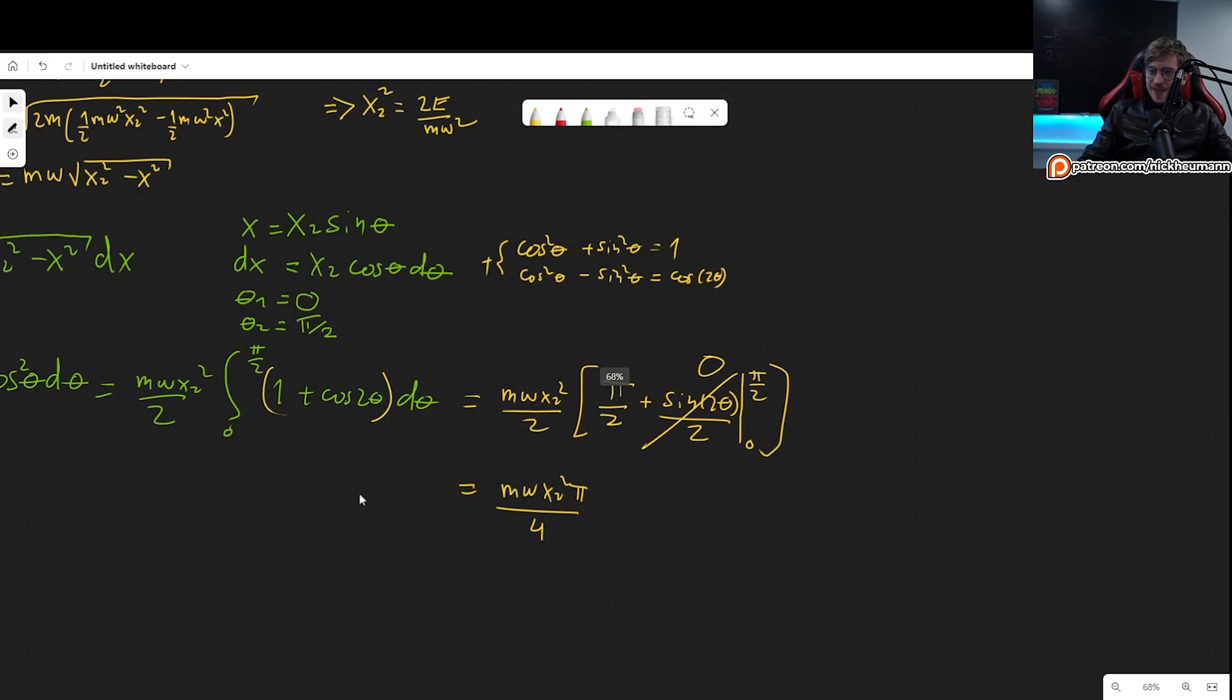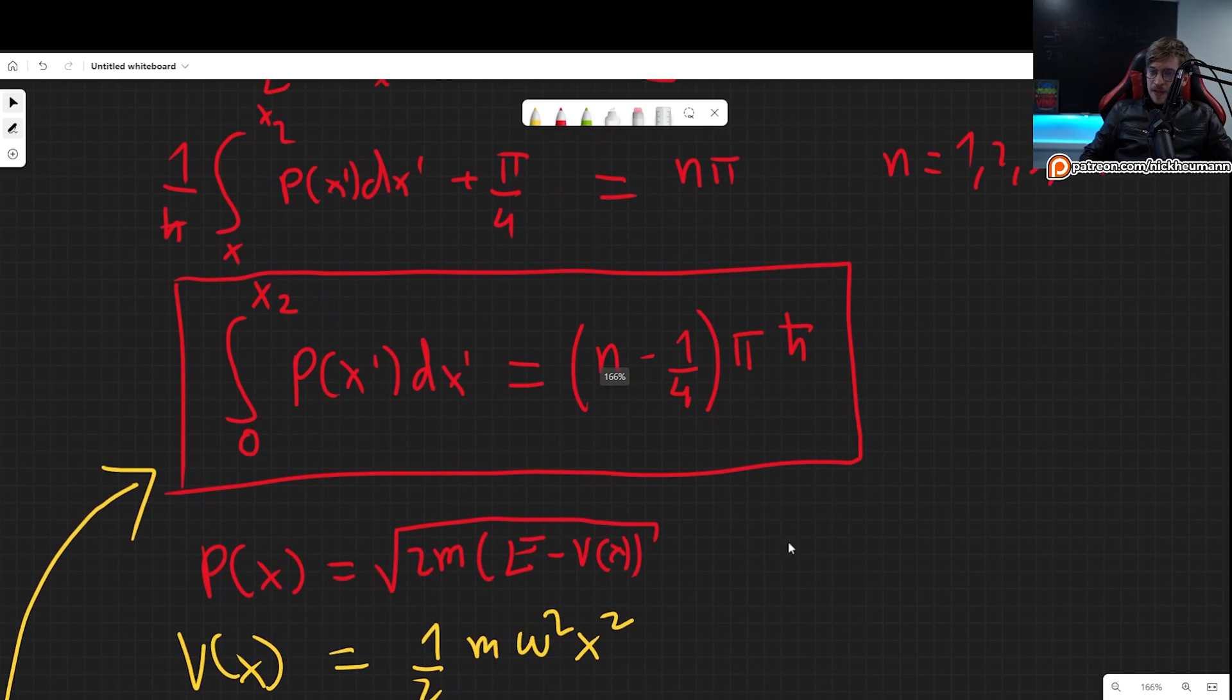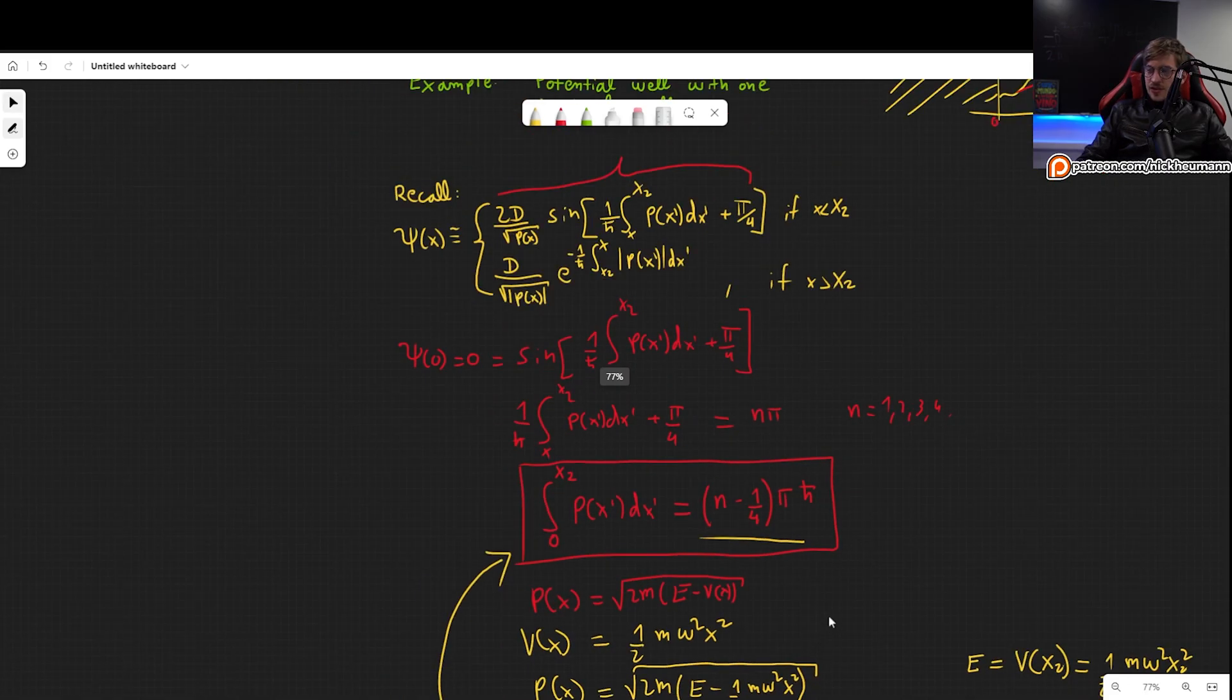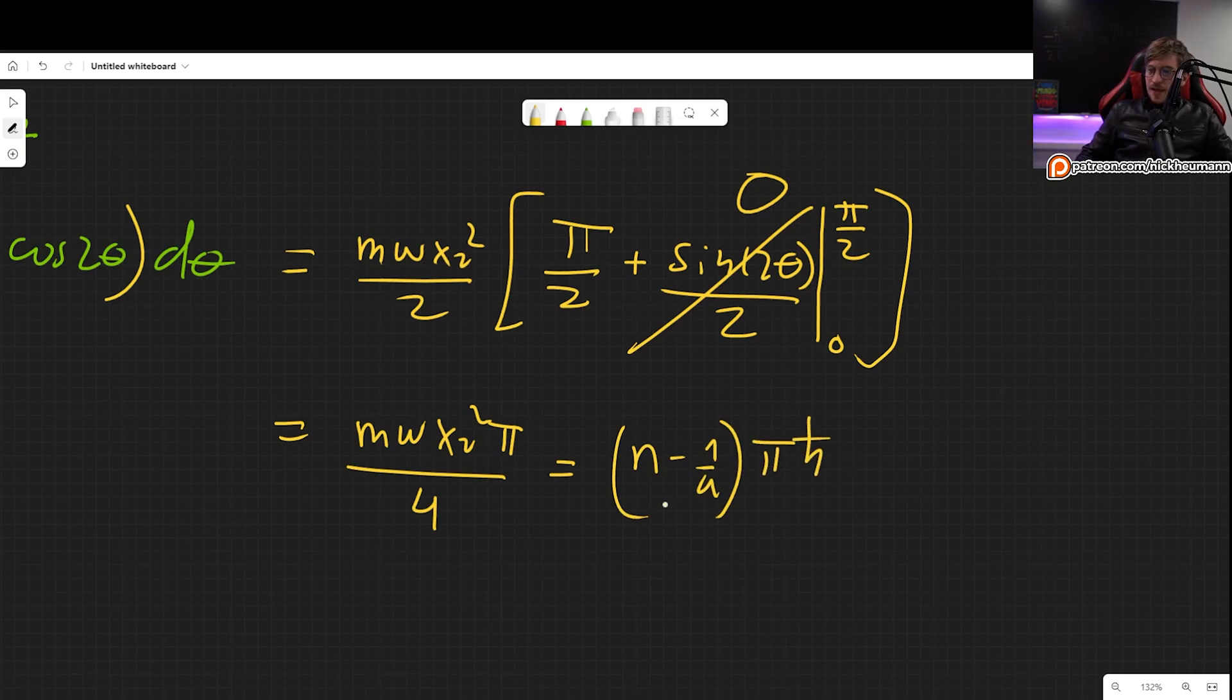And what is this entire thing? What we were doing this entire time is simply finding this integral. Now that we found it, we know that its value has to be n with n 1, 2, 3, 4, different possible energy levels, minus 1 4th pi h bar. So let's plug that in. So this has to be equal to n minus 1 4th pi h bar.